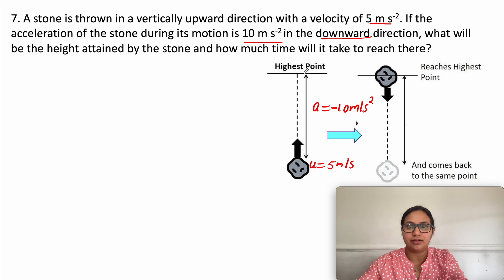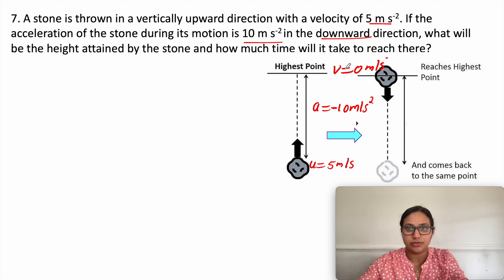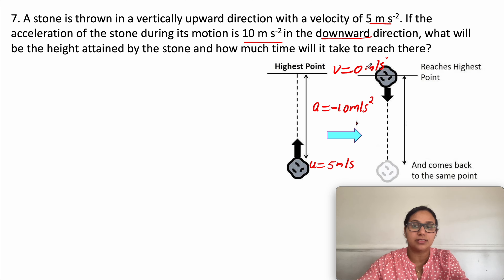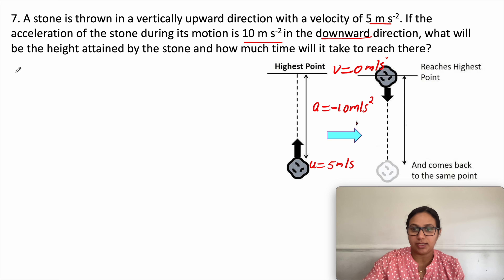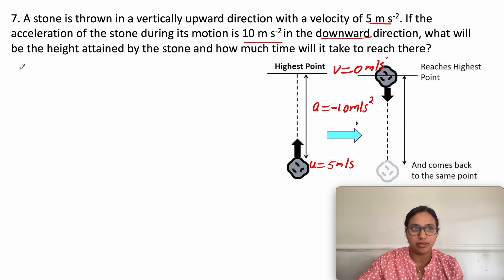What is the final velocity? When the stone reaches the highest point, the final velocity v = 0 meters per second. Time taken is not given. We need to calculate the height attained by the stone, so we use the appropriate equation of motion.